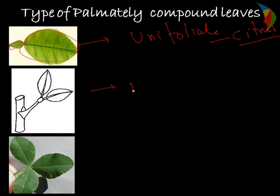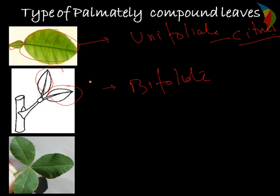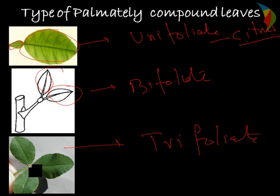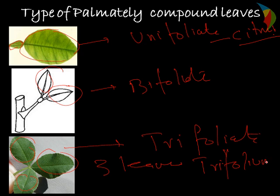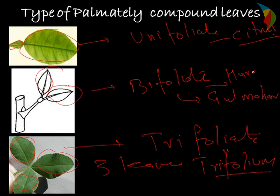The second type is bifoliate — two leaves are there on top of the leaf edge. The third type is trifoliate, where on the tip you can see three leaves coming out. The common example of trifoliate is Trifolium. In the case of bifoliate, the examples are Bauhinia (wood mohar) or hardwickia plant.